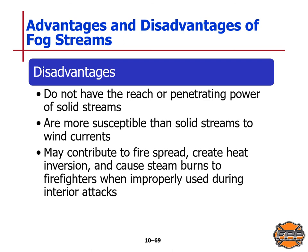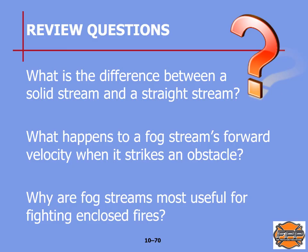Some disadvantages of fog streams: they do not have the reach or penetrating power of a solid stream, are more susceptible than solid streams to wind currents, and sometimes may contribute to fire spread by creating heat inversion. This can cause steam burns to firefighters when not properly used during an interior attack. Review questions: What is the difference between a solid stream and a straight stream — page 239. What happens to a fog stream's forward velocity when it strikes an obstacle — page 240. Why are fog streams most useful for fighting enclosed fires — page 241 of your manual.